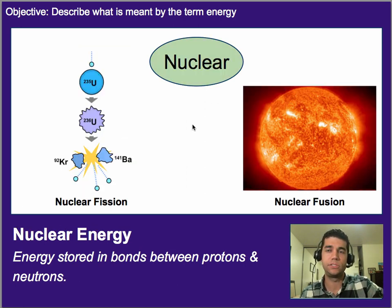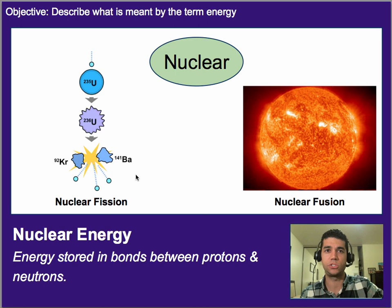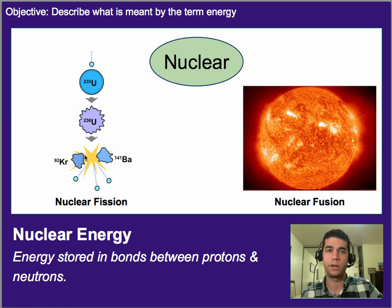Nuclear energy is the process of either splitting or fusing two parts of an atom or two subatomic particles together, and as a result it releases energy. It's energy stored in the bonds of neutrons and protons. Examples are nuclear fission, which is what our nuclear power plants are based on, and nuclear fusion — instead of splitting, these join together — and our sun is actually a great example of that.